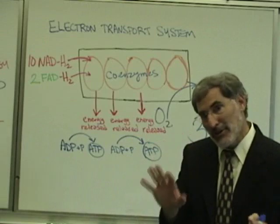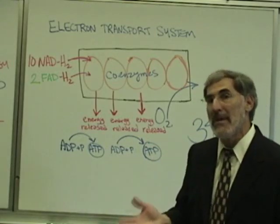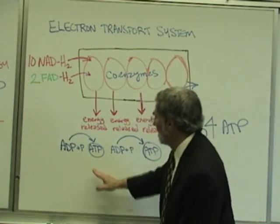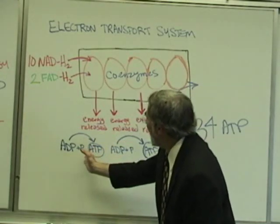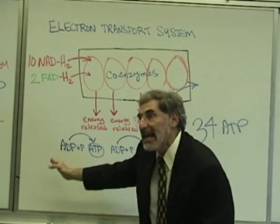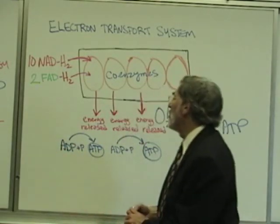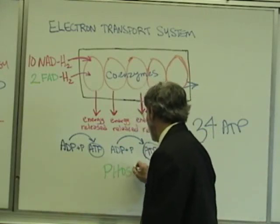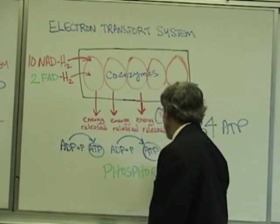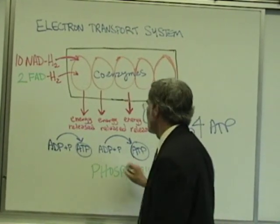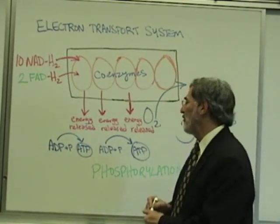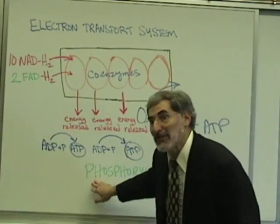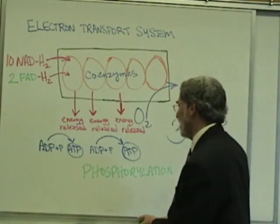That explains the answer to where the remaining 34 ATPs come from — they are produced in this process. There's a name for attaching a phosphate onto ADP to form ATP. We call that process phosphorylation. Phosphorylation is the name for adding a phosphate onto ADP to form a high energy ATP. Why is it called phosphorylation? Because we're adding a phosphate group.